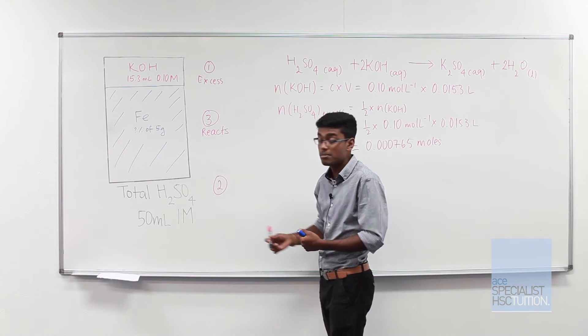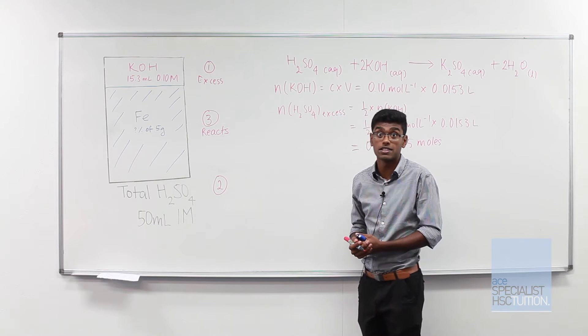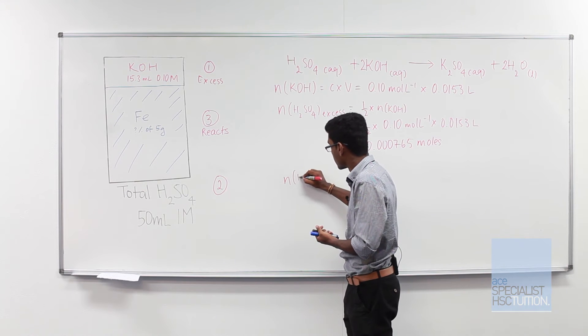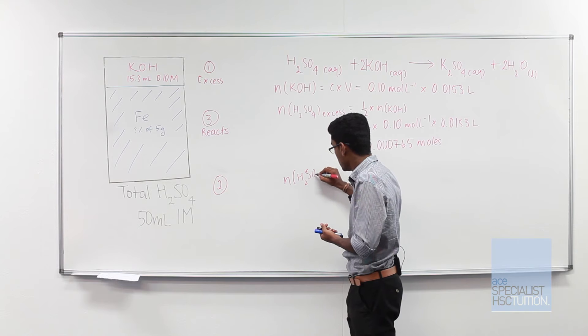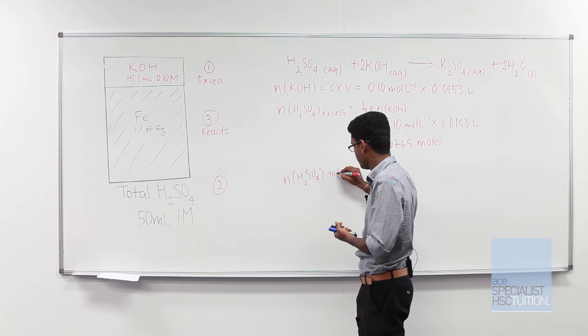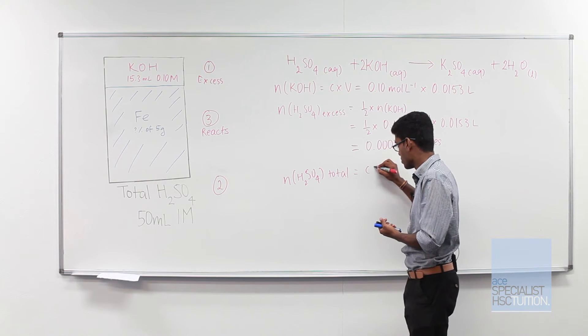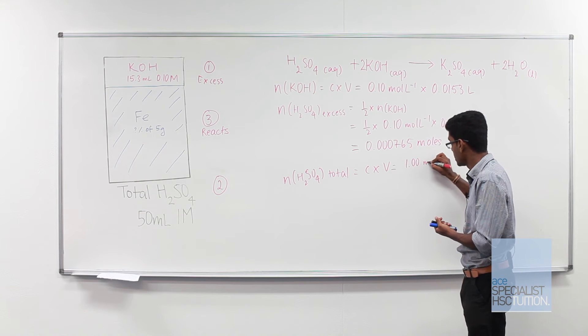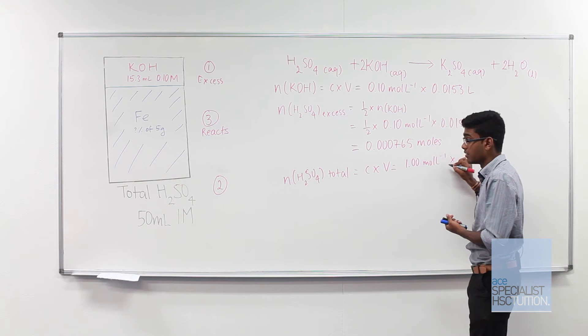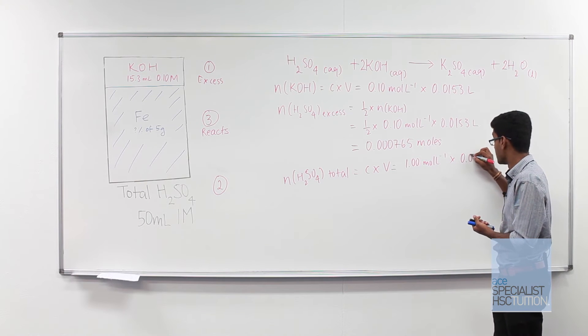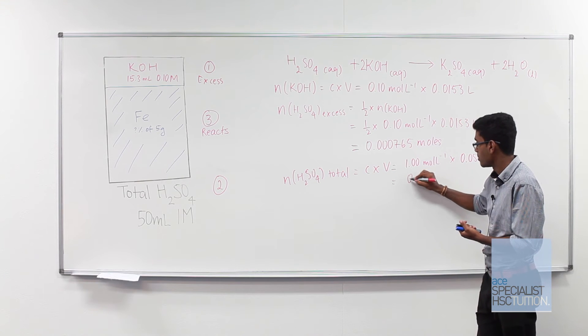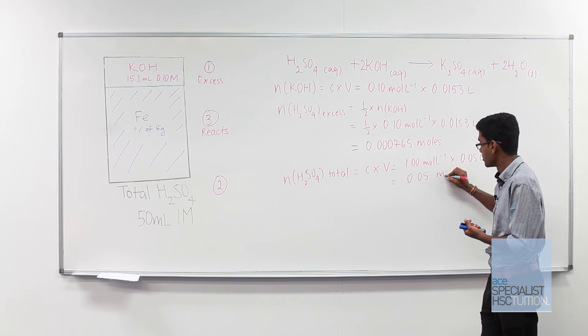Let's now move on to our second step and that is working out the number of moles of sulfuric acid in total. So number of moles of sulfuric acid in total equals concentration times volume. This time we have a concentration of 1 mole per liter and a volume of 50 milliliters. And therefore we have 0.05 moles in total.